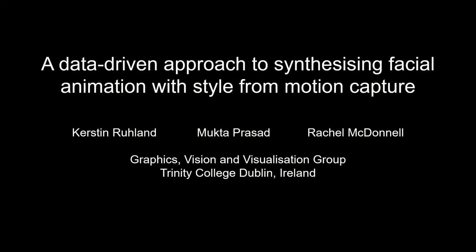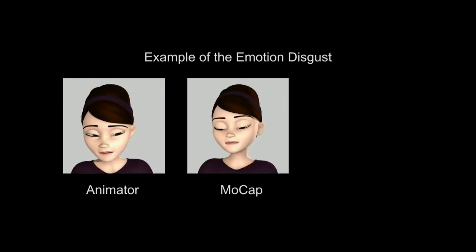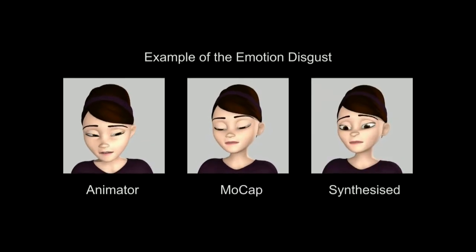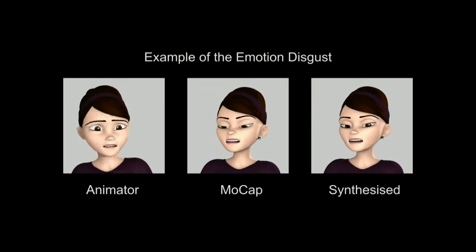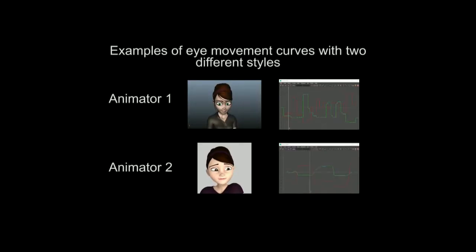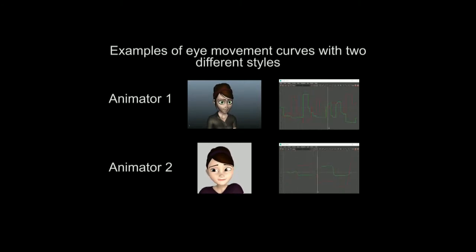Our method uses example curves from a professional cartoon animator as patterns to match and modify a recorded motion capture sequence, creating a simplified and stylized animation. We are making the assumption that the style of an animation exists in the spacing of keyframes, tangents, interpolation methods, and timing of the curves.